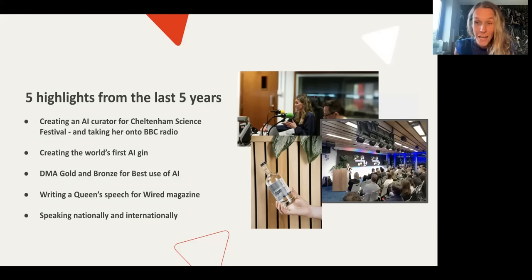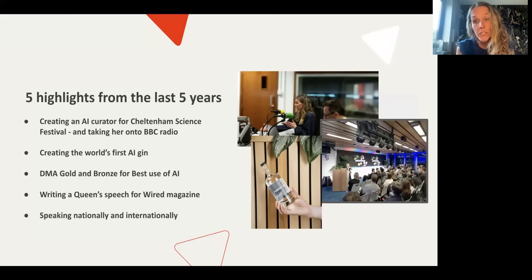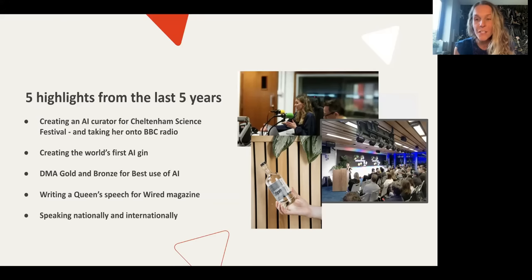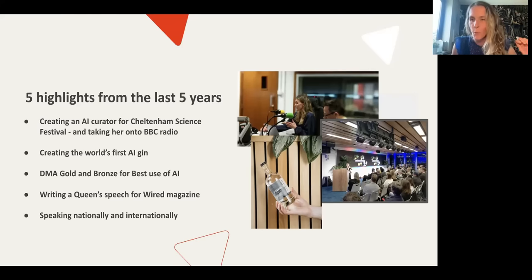We also created the world's first AI gin. We used AI to generate a range of gin recipes and then took those to a gin distillery in Bristol called Psychopomp. They used their amazing human crafting skills to turn the AI-generated recipes into a gin. The gin also had an AI-generated name — Monka's Garkle — trained on every gin name we could find. It won two taste awards, went all over the world, and sold out very quickly.